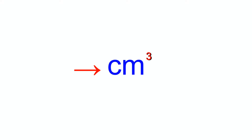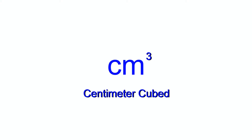This is the expression of cubic centimeter that you will see most often in your science courses. The cm is short for centimeter, and the superscript three — or what we would call in mathematics the exponent three — means cubed. So we can call this expression a centimeter cubed, or a cubic centimeter.